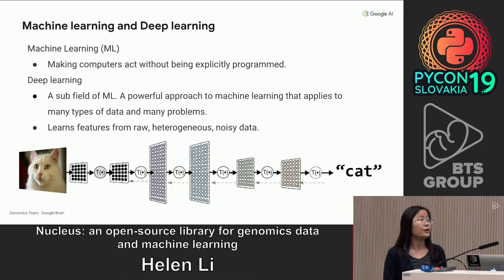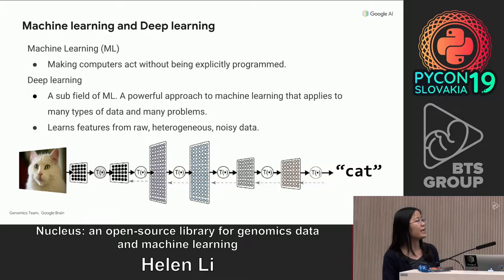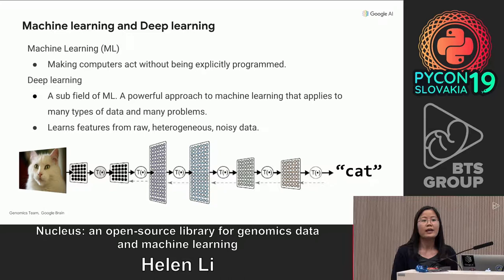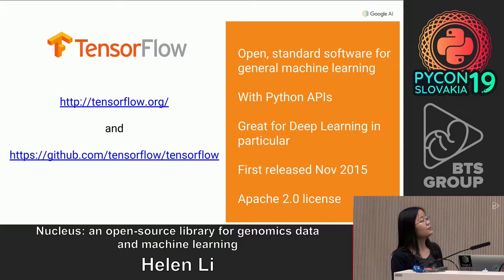A classic example is to assign a label to a picture. Here you can see a cat picture. Through these layers of mathematical trainable units, the system can learn to tell that this is a cat. To formulate a machine learning problem of this type, we need a lot of labeled data. Later in this talk, I will discuss why genomics is well suited to apply machine learning.